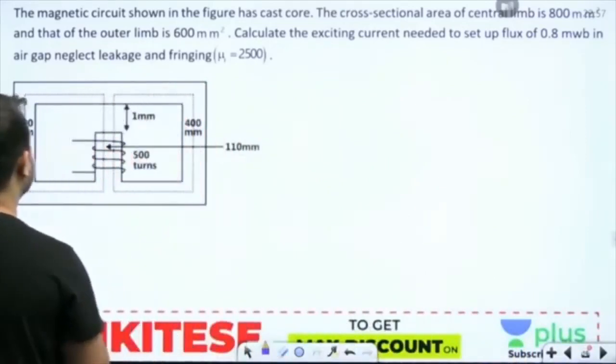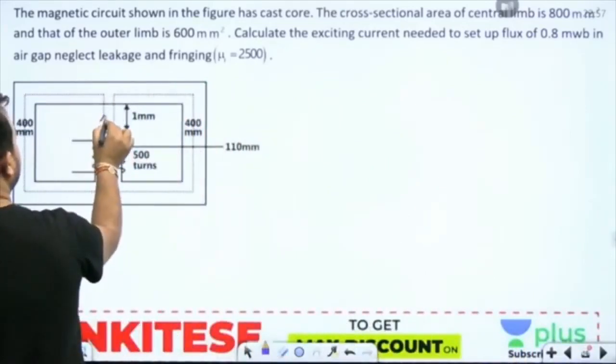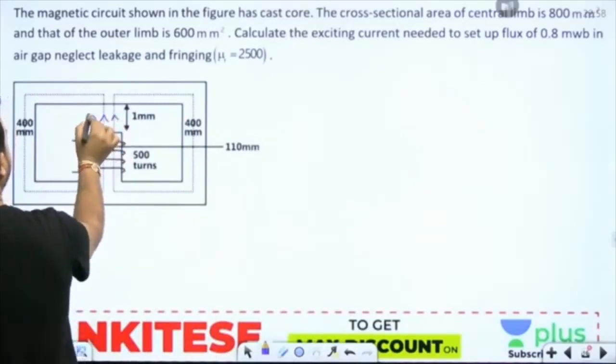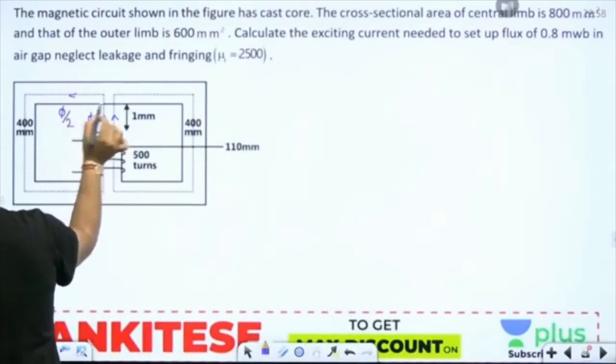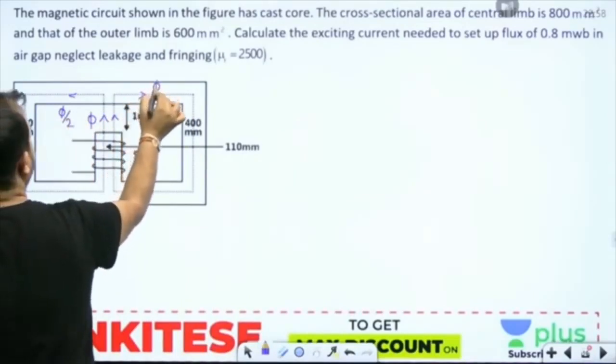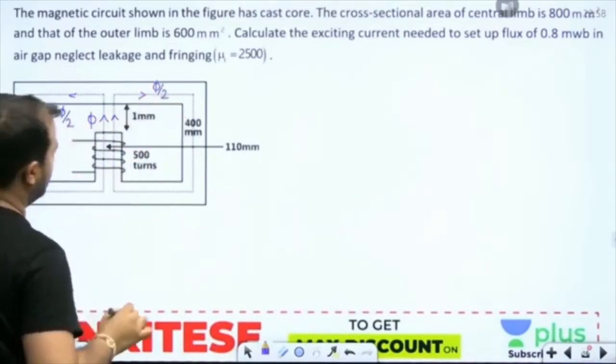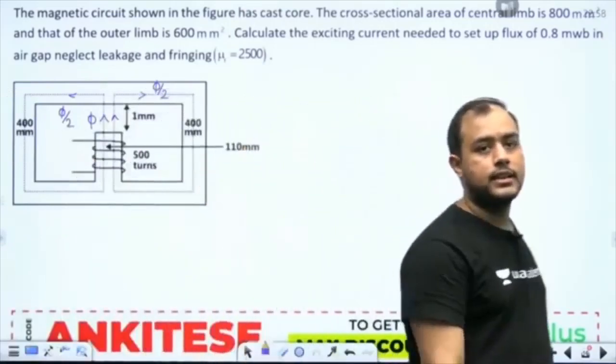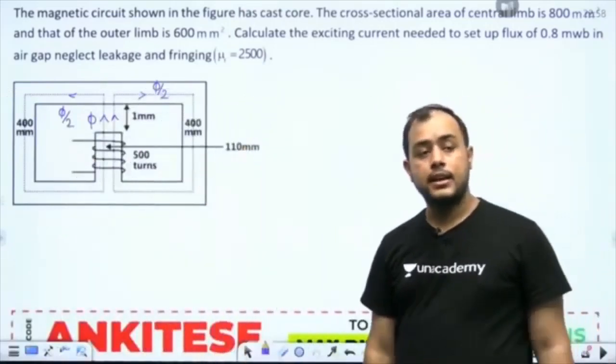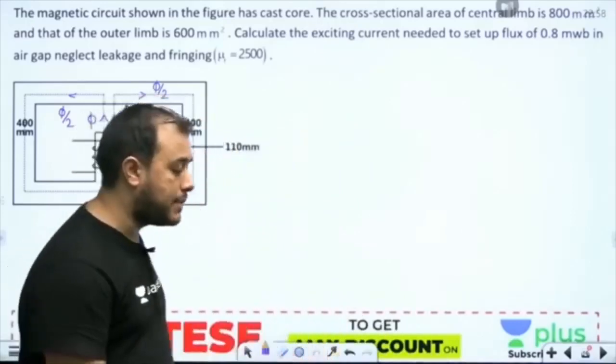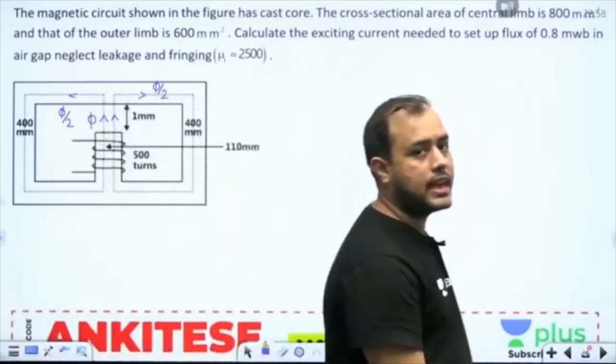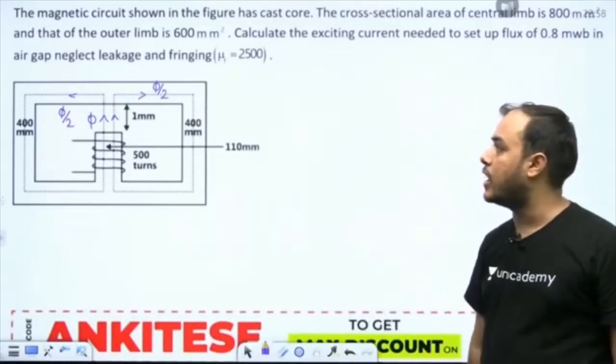Now how does the flux move here? The flux moves like this - 5 by 2 goes here and 5 by 2 goes here. So the flux gets divided. If you want to connect with me on Facebook, Instagram, Telegram anywhere, just wait till the end of this lecture.